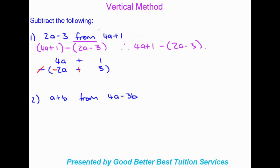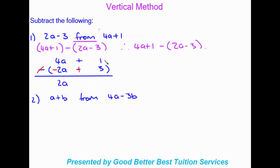Now we work out the answer. Working left to right: 4a minus 2a gives us 2a. Then positive 1 plus 3 gives us positive 4. So our final answer is 2a plus 4. We brought the second term down first, put in the minus, placed the subtracted expression in brackets, and multiplied the negative through — which is critical to getting the correct answer.